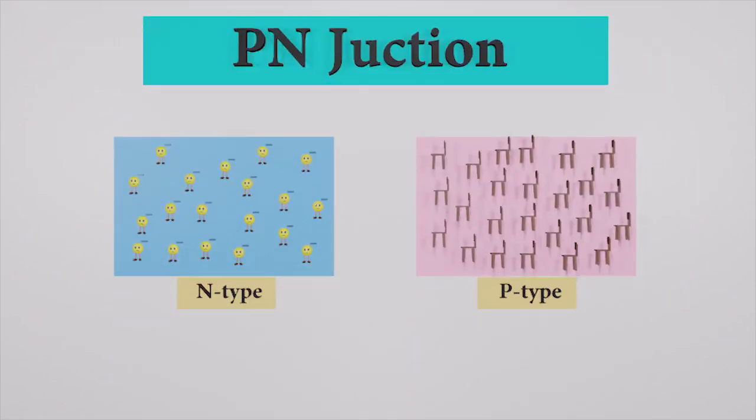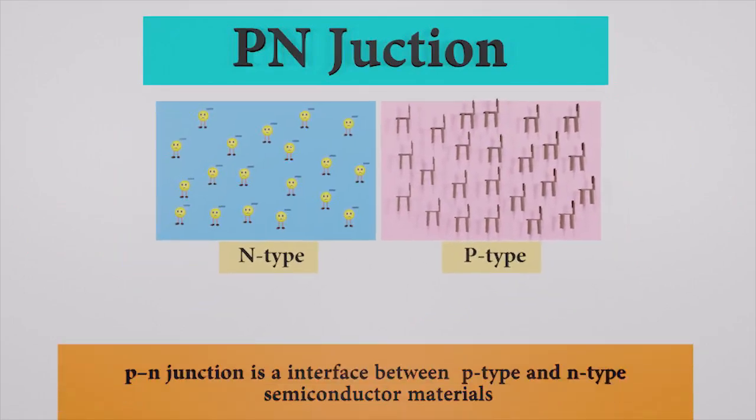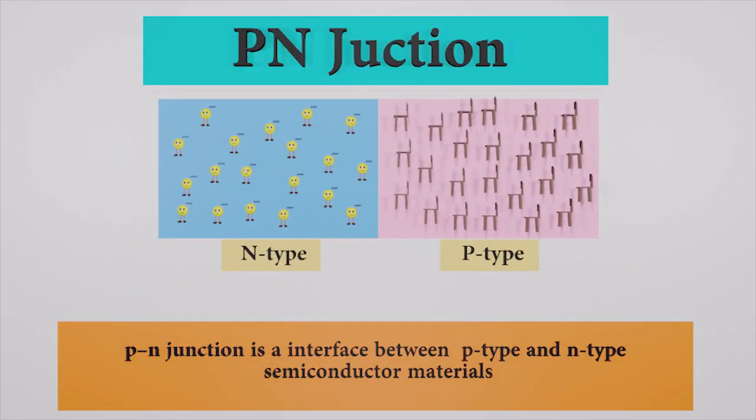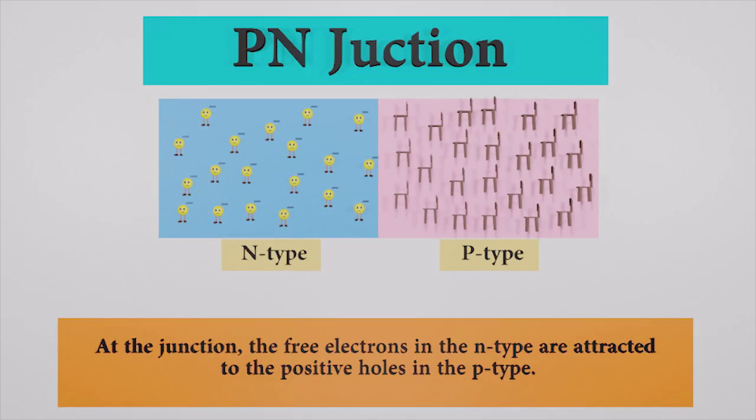Let's see what happens in the PN junction. A PN junction is an interface between P-type and N-type semiconductor materials. At the junction, free electrons in the N-type are attracted to the positive holes in the P-type region.